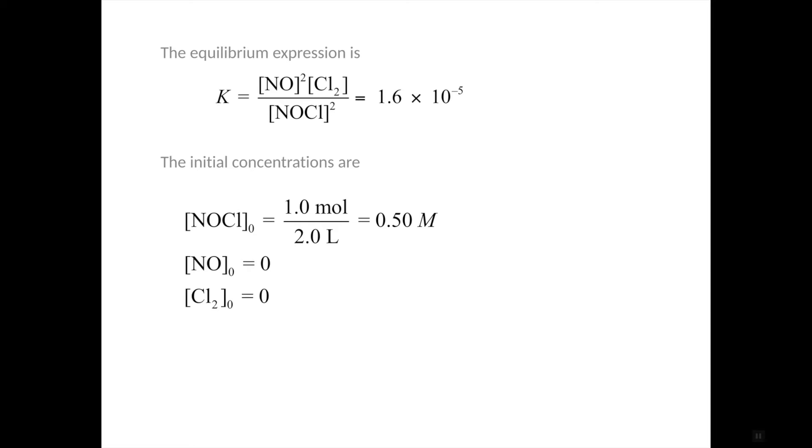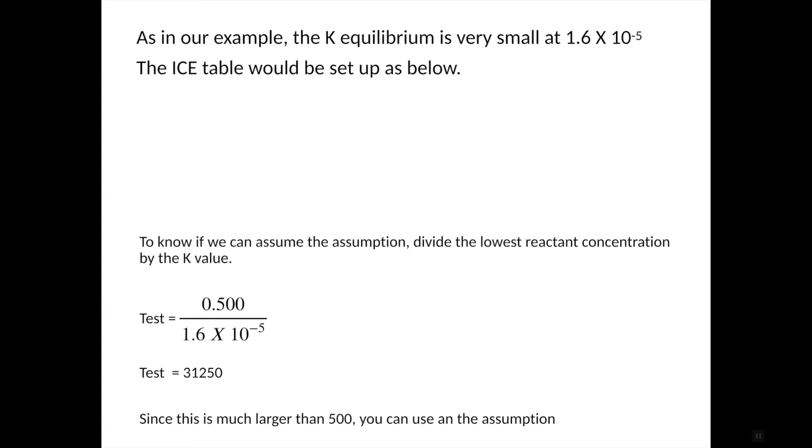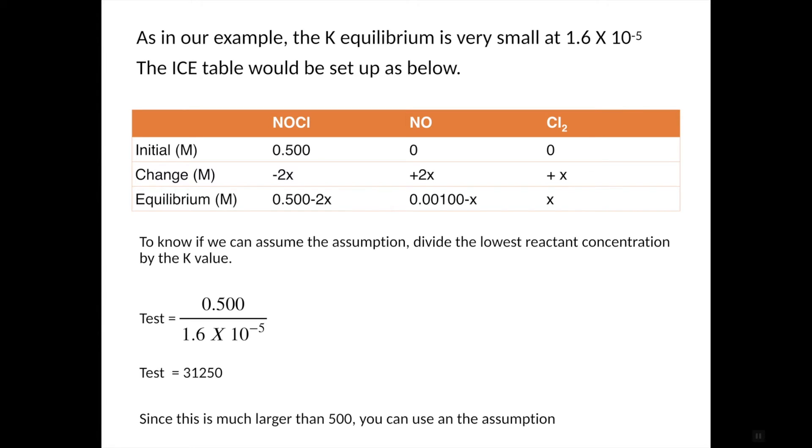To calculate the initial concentration, in this case, we were given moles and volume, so you have to calculate it, and it's one mole divided by two liters for the initial NOCl. So we're going to put this into an ICE table, like this. We have only one reactant, which is NOCl, because there's two of them, it decreases by 2X, and our two products, NO is 2X because there are two of them, and Cl2 is just 1X.